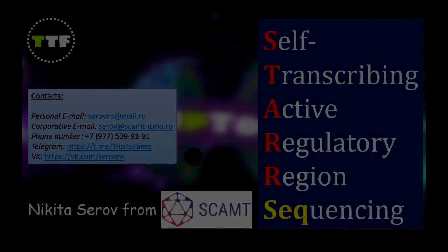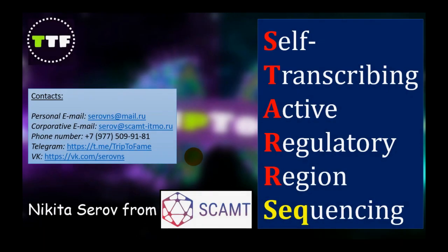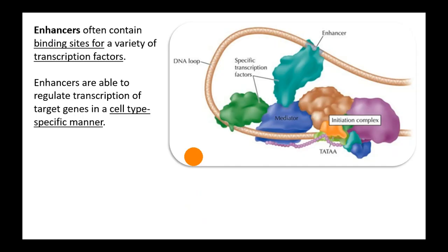Gene expression regulation is partially controlled by sequences called enhancers. These sequences often contain binding sites for a variety of transcription factors. Enhancers are able to regulate transcription of target genes in a cell type-specific manner.